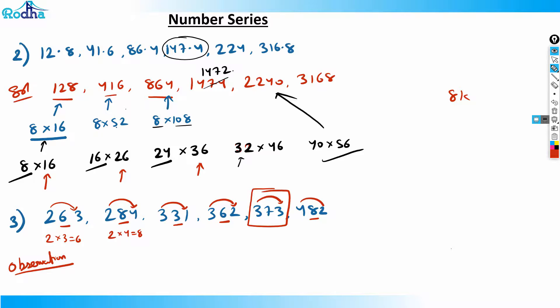If two number series questions appear in an exam and you solve both in two minutes, you are three minutes ahead of others and six marks ahead as well. That's a great position to be in. Now let's do the fourth question.